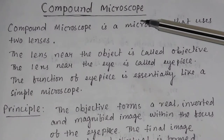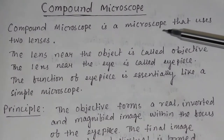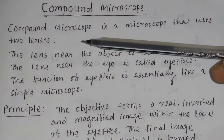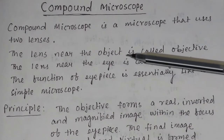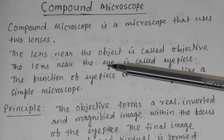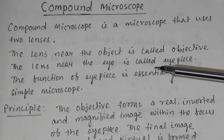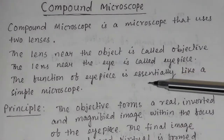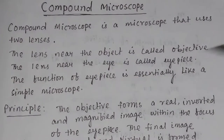Compound microscope. A compound microscope is a microscope that uses two lenses. The lens which is near the object is called the objective, and the lens which is near the eye is called the eyepiece. The function of the eyepiece is essentially like a simple microscope.